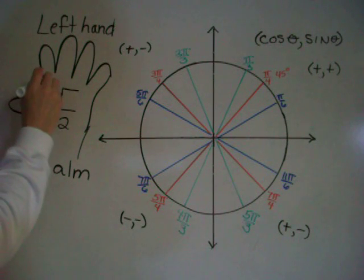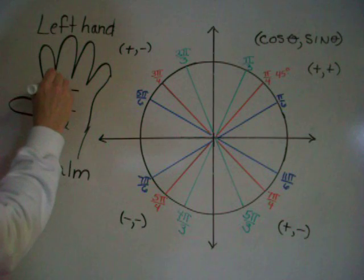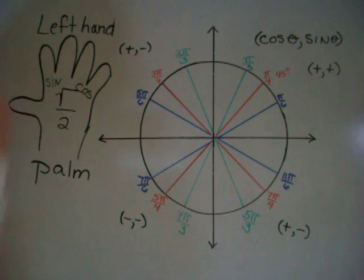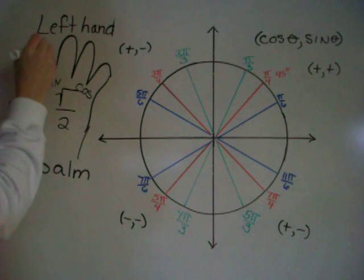On your index finger knuckle right here, write sine. On the other side, it's cosine. On your thumb, put 0.